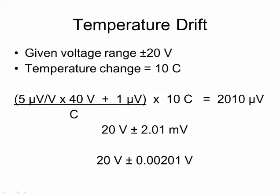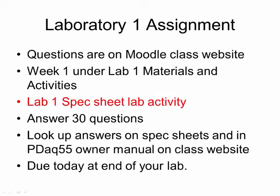These examples illustrate how spec sheet information is used to estimate the precision of readings from a sensor or instrumentation system. It gives you a way to compare the capabilities of different equipment, makes, and models from different suppliers. The numbers obtained in the examples are quite small and in many cases could be neglected, but you don't know that until you do the calculations. For the Laboratory 1 assignment, you will be asked to answer 30 questions based on the information in these three Lab 1 videos and the information on the Moodle site about the PDAC-55, pressure gauges, and pH probes. You will also be asked to calculate uncertainties given accuracy and drift information.